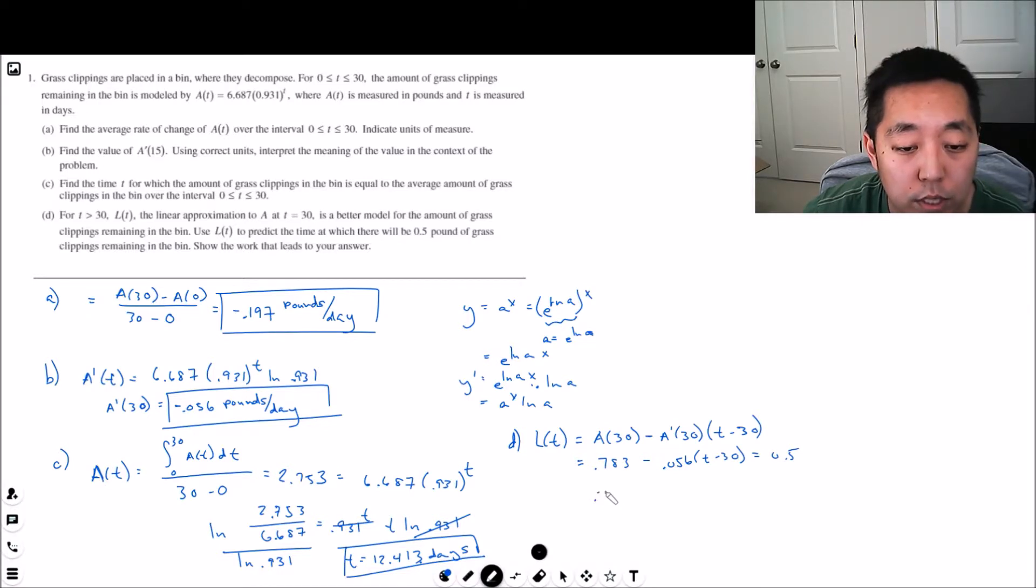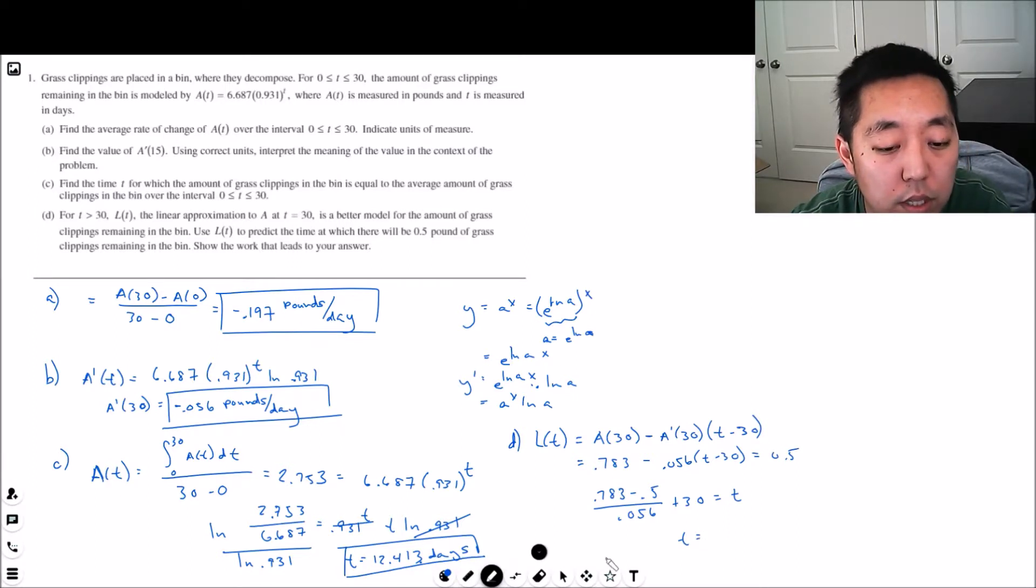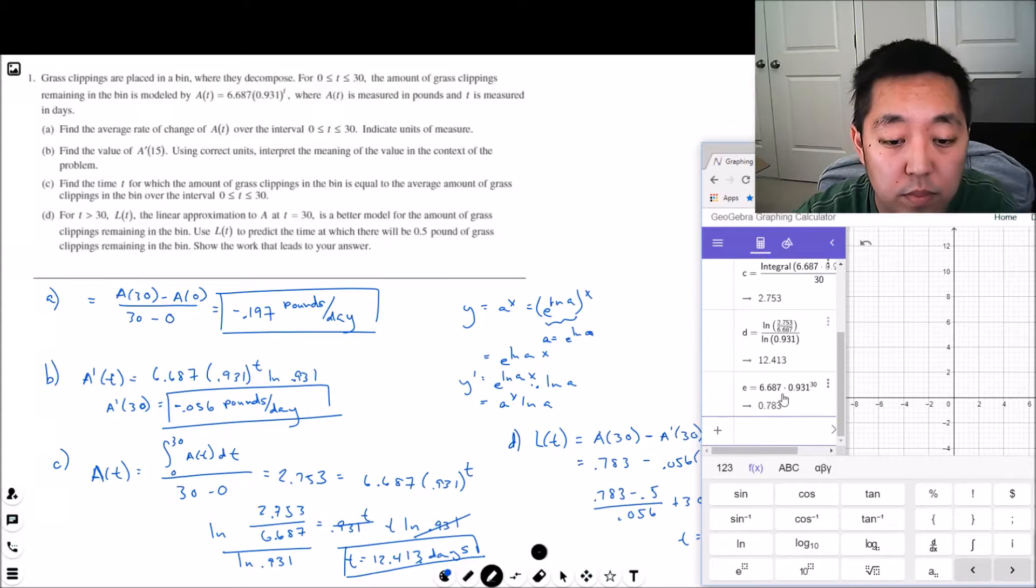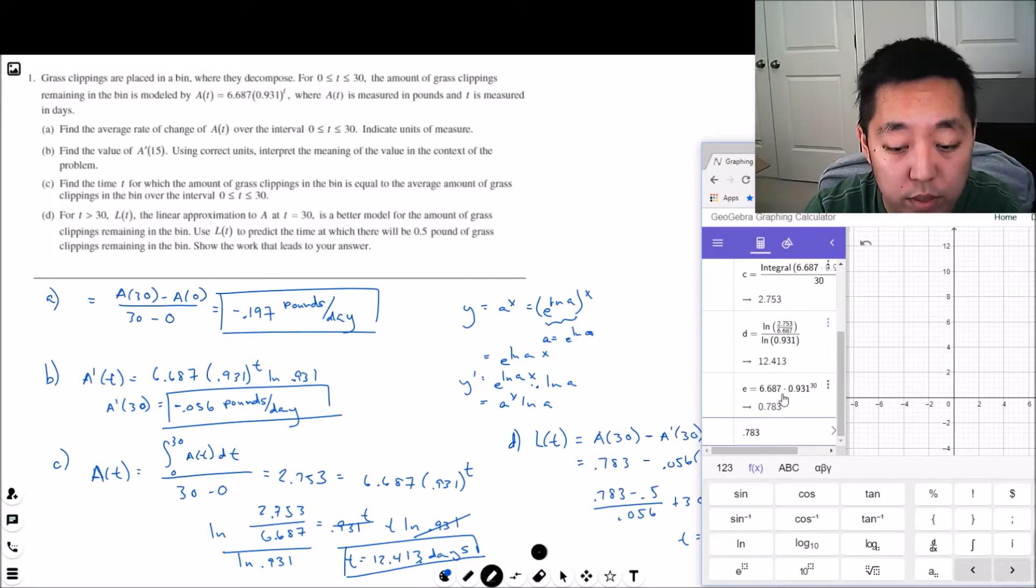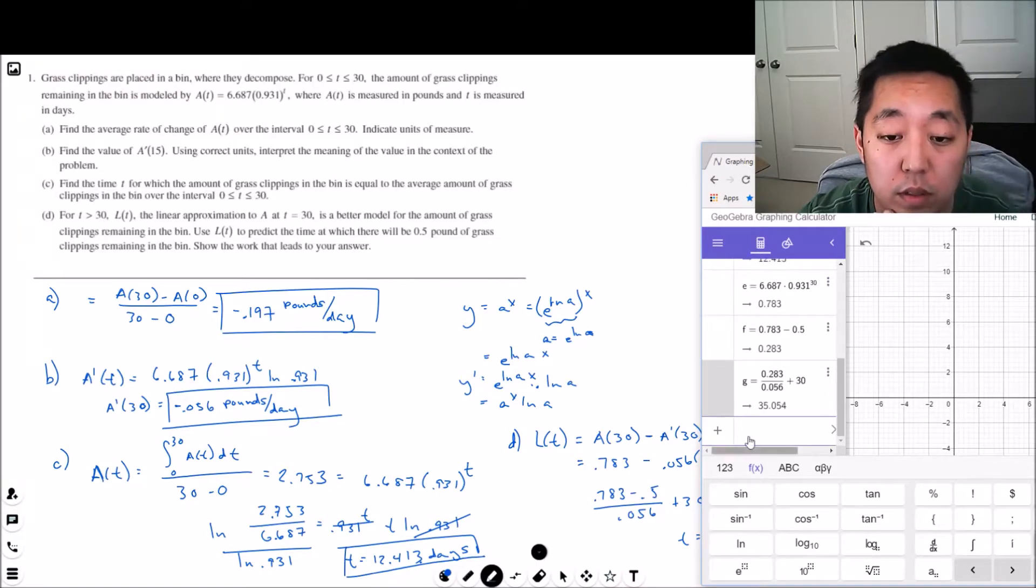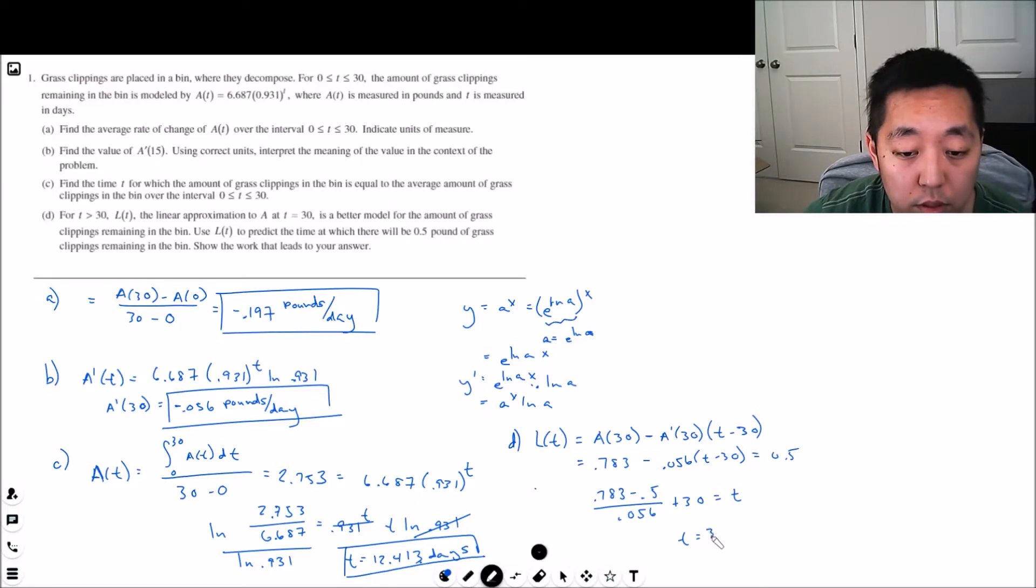I can do 0.783 minus 0.5 divided by 0.056 then plus 30 to equal t. So then t equals: 0.783 minus 0.053 divided by 0.056 plus 30: 35.054 days.